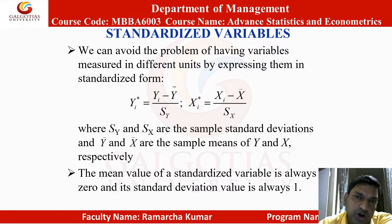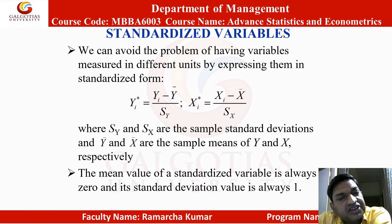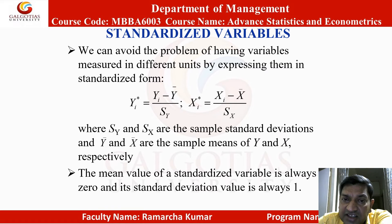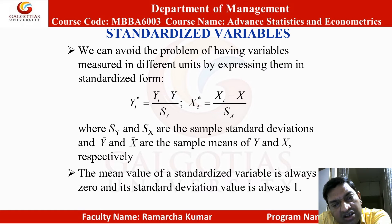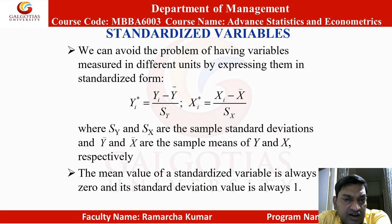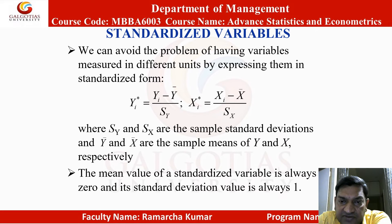Standardized variables: we can avoid the problem of having variables measured in different units by expressing them in standardized form. y_i* = (y_i − ȳ) / s_y, where s_y is the sample standard deviation of y. Similarly for x_i*. By subtracting the mean and dividing by the standard deviation, the mean of the standardized variable is 0 and the variance is 1.